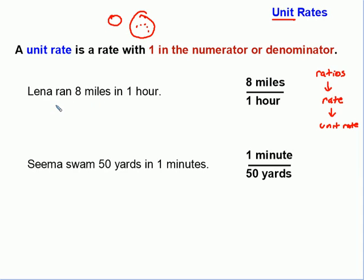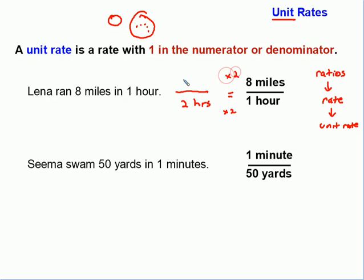For example, Lena ran eight miles in one hour. We have a unit rate here because there's one in the denominator — it took her one hour to run eight miles. Unit rates are really useful: if we change one hour to two hours, we simply multiply both values by two, giving us 16 miles. That's what's really neat about unit rates — they help us solve lots of different problems.